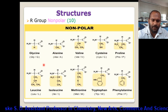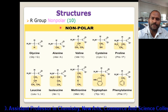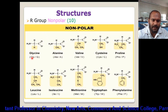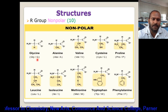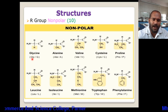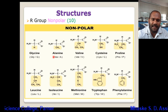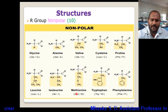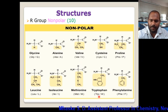In short notation, we can represent glycine as GLY or simply G; alanine as ALA or A; valine as VAL or V. Similarly, methionine is M, tryptophan is TRP, and phenylalanine is PHE. These are the short forms of the amino acids in the non-polar class.